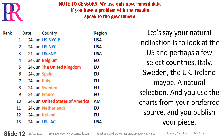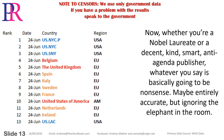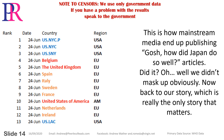Let's say your natural inclination is to look at the US and perhaps a few select countries — Italy, Sweden, the UK, Ireland maybe — a natural selection, and you use the charts from your preferred source and publish your piece. Whether you're a Nobel laureate or a decent, smart, anti-agenda publisher, whatever you say is basically going to be nonsense — maybe entirely accurate, but ignoring the elephant in the room. This is how mainstream media end up publishing 'how did Japan do so well?' articles.